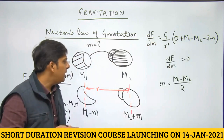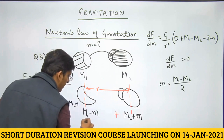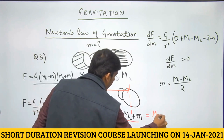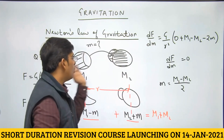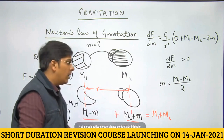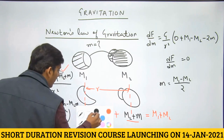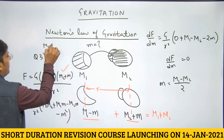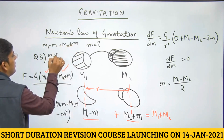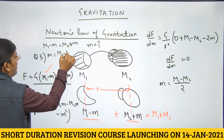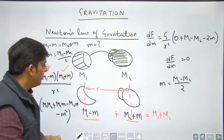We have a shortcut for this too. The sum of the two masses (M1 − m) + (M2 + m) = M1 + M2, which is always constant. Since we want the product to be maximum and the sum is constant, the product is maximum when the two parts are equal. This gives m = (M1 − M2)/2, confirming our answer.